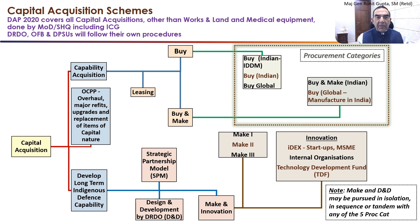Capital Acquisition Schemes are basically what controls Capital Budget Expenditure. DAP 2020 covers all Capital Acquisitions other than Works, Land, and Medical Equipment. These are done by the Ministry of Defense and the SHQ, including the Indian Coast Guard. The DRDO, the Ordnance Factory Board and DPSOs follow their own procedures.